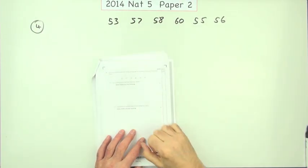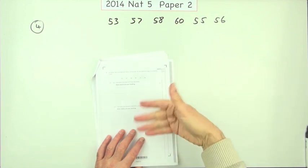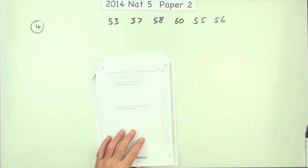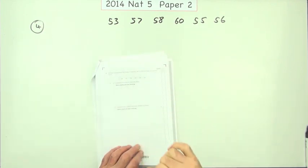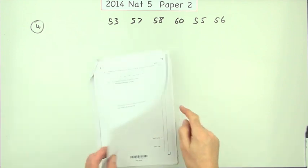So question four then from the 2014 National 5 Second Paper. Here we are. Mean and standard deviation. There's five marks for this question altogether. Four marks for finding the mean and the standard deviation. One mark for using the results.